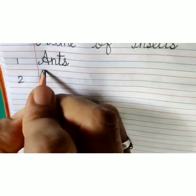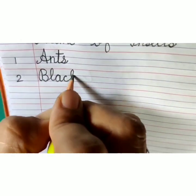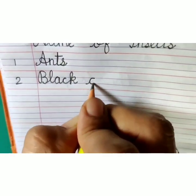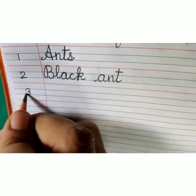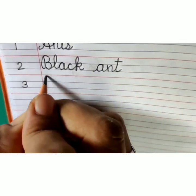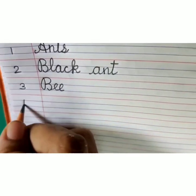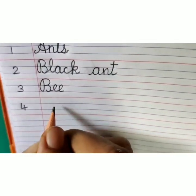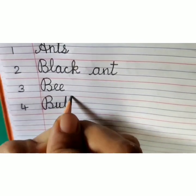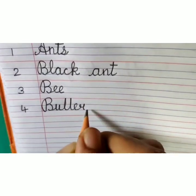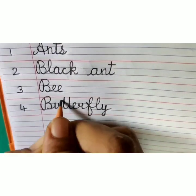Number 2, B-L-A-C-K, black, A-N-T, ant, black ant. Number 3, B-E-E, bee. Number 4, B-U-T-T-E-R-F-L-Y, butterfly.